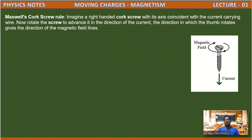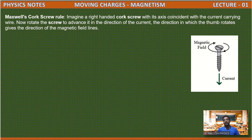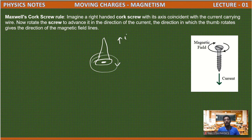Next is Maxwell's cork screw rule. This rule is also used to find the direction of magnetic field. Imagine a right-handed cork screw with its axis coinciding with the current carrying wire. Rotate the screw to advance in the direction of current — the direction in which the screw rotates gives the direction of the magnetic field. For example, if the current is flowing inward, you rotate the screw in a clockwise direction so it advances along the current. So this clockwise direction gives the direction of the magnetic field.